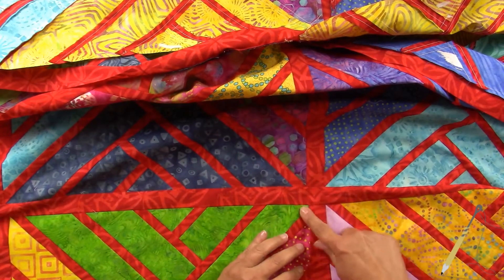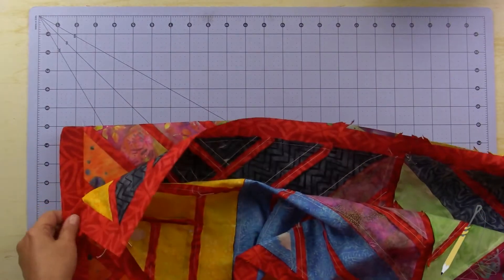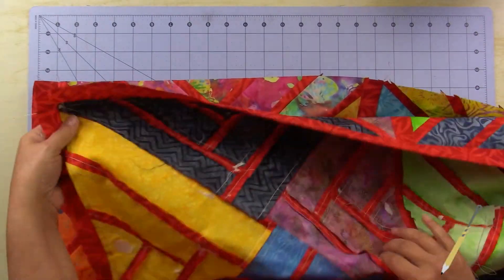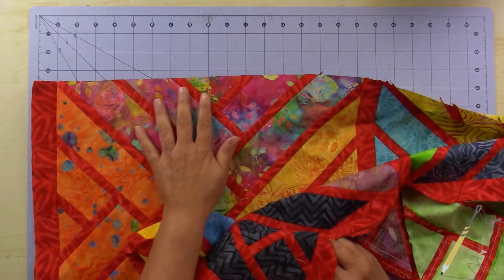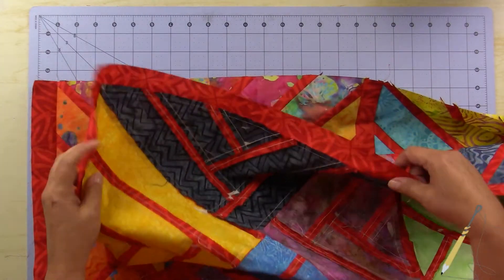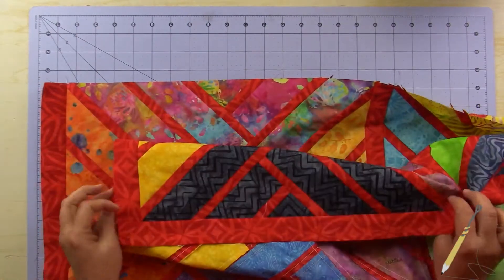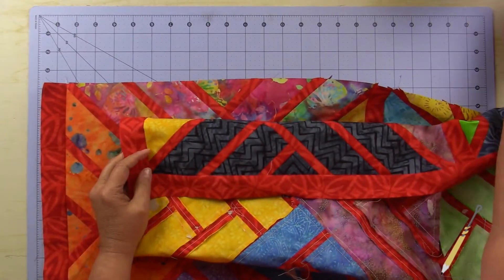We're going to look first at sewing this top column to this column here. This top one already has the vertical sashing, and what we're going to do is take my marking pencil.